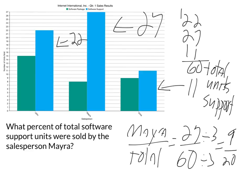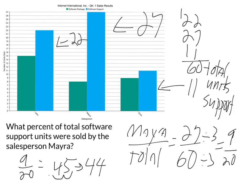But the question asks for a percent, so we need to convert this fraction to a percent. You do that by dividing the numerator by the denominator: 9 divided by 20 equals 0.45. Then to convert that decimal to a percent, you move the decimal two spaces to the right and add the percent sign — so that gives us 45 percent.